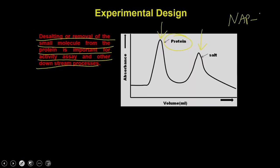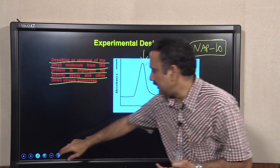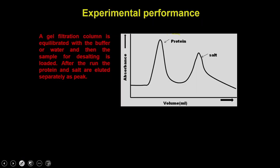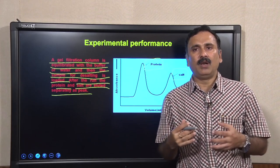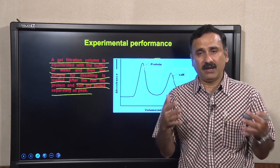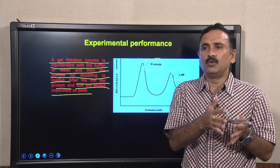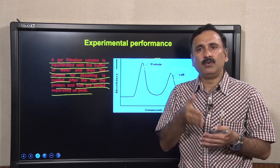One commercially available option is the NAP column for desalting proteins and removing small ligands. A small movie clip demonstrating the NAP column desalting procedure is provided to show more clearly how to remove ammonium sulfate or other small molecules from a protein sample.